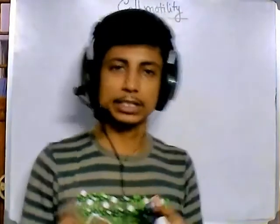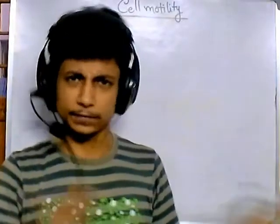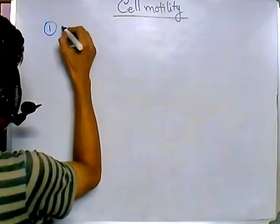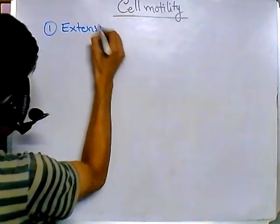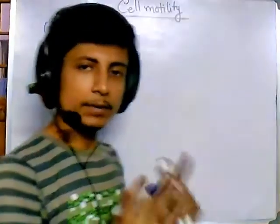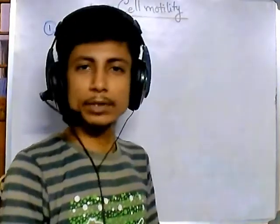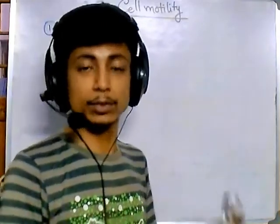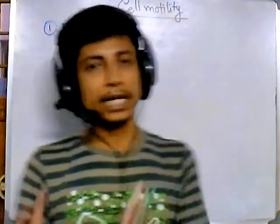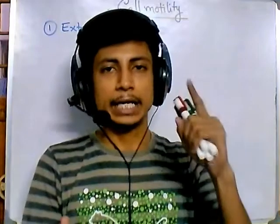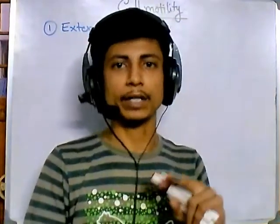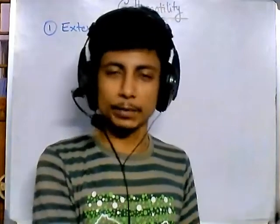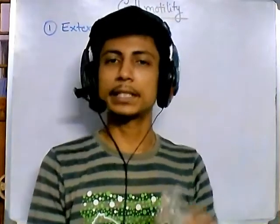Cell motility is a process of four sequential stages. The first stage of cell motility is extension. For a cell to be motile, the most important things required are motor proteins inside the cell and cytoskeletal elements. The cytoskeletal elements are mostly made up of actin filaments, and the motor proteins include kinesin, dynein, and myosin. These proteins help organelles move, and for whole cell movement we will see the importance of myosin.